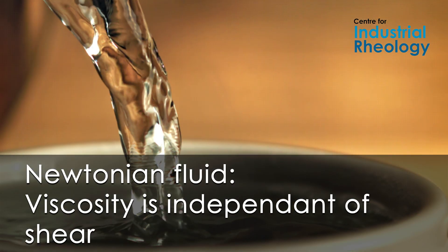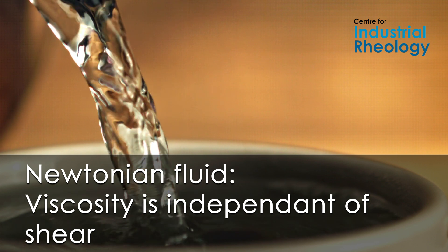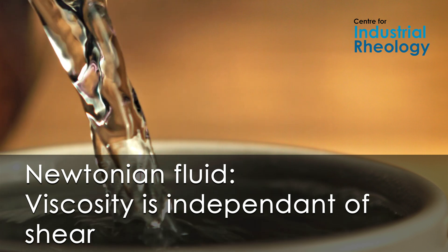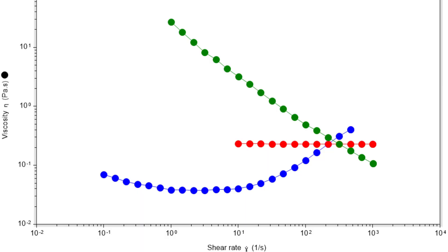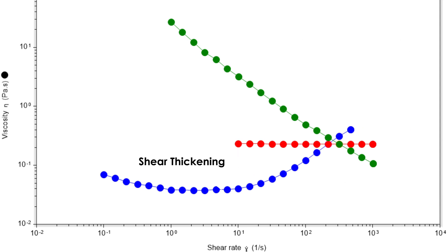While there are some samples that show us Newtonian behaviour — that's where they have one viscosity no matter how hard we push them or how fast we make them flow — the majority of materials are more complicated than that and show us non-Newtonian behaviour, where the viscosity will change depending on the shear rate applied to them. You can think of that like how fast we make them flow.